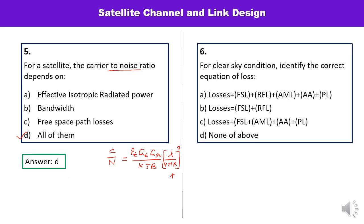Question number 6: for a clear sky condition, identify the correct equation of loss. The free space loss is written as (4πr/λ)². Other losses include atmospheric attenuation and polarization losses. Option A is correct because it includes the maximum types of losses. Let us check — yes, this is the correct answer.